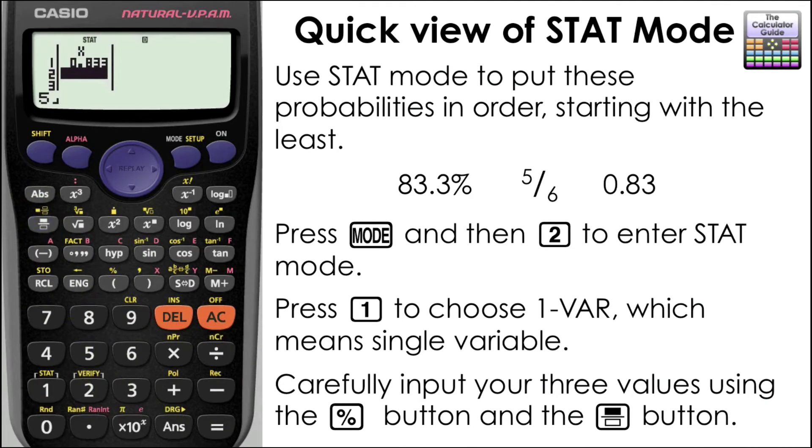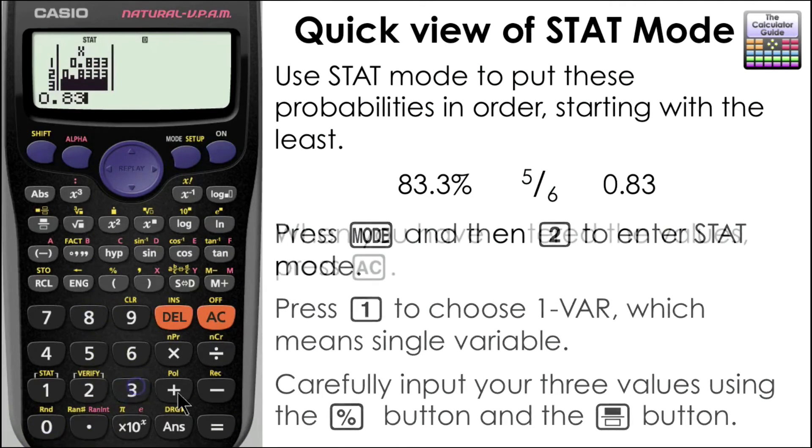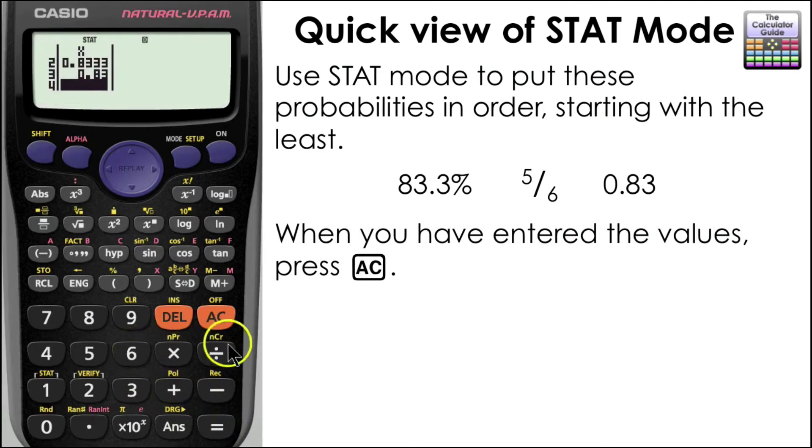Now to input the fraction, we need to be careful because the STAT operates in line mode or similar to line mode. We need to press the numerator first, then the fraction button, then 6. And it's also changed that to a decimal as well. And now we've got our decimal 0.83.